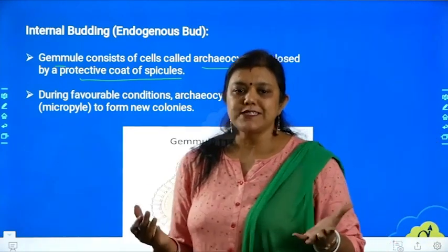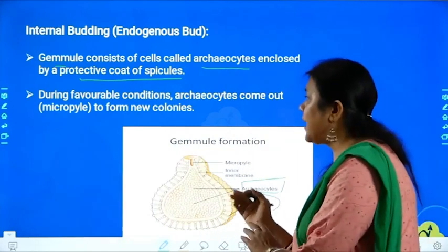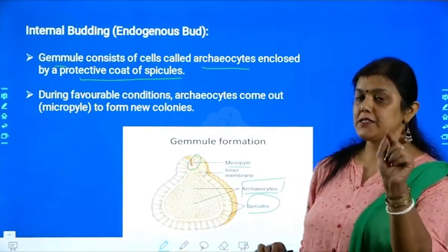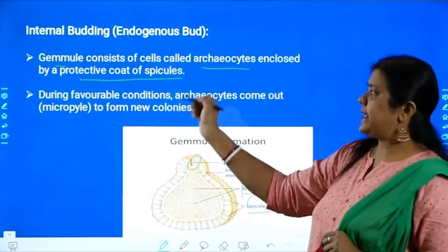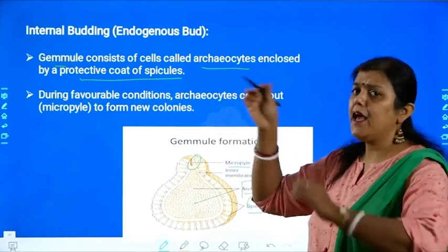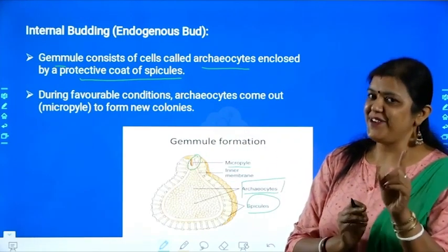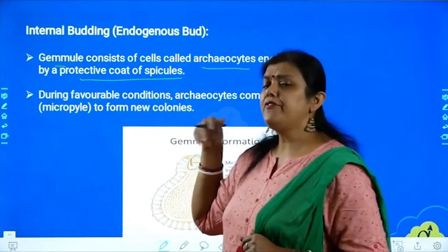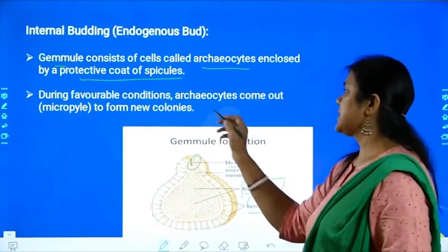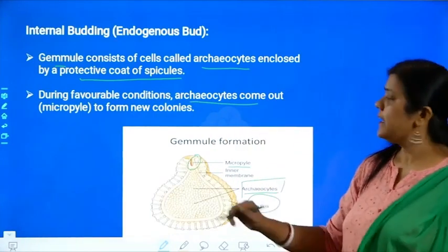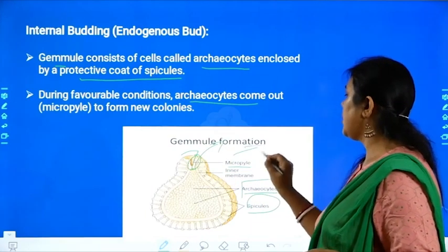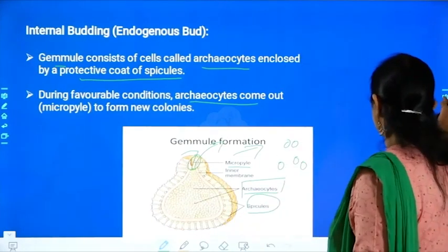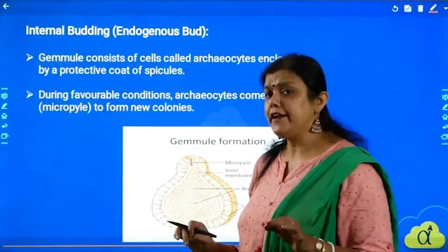How do these archaeocytes come out from the body of the organism? They will come out through a small opening called the micropyle. So in internal budding or endogenous budding, we have a gemmule which contains many tiny cells called archaeocytes, covered with a protective coat called spicules. During favorable conditions, the archaeocytes come out of the micropyle and form new colonies. This is called internal budding or endogenous budding.